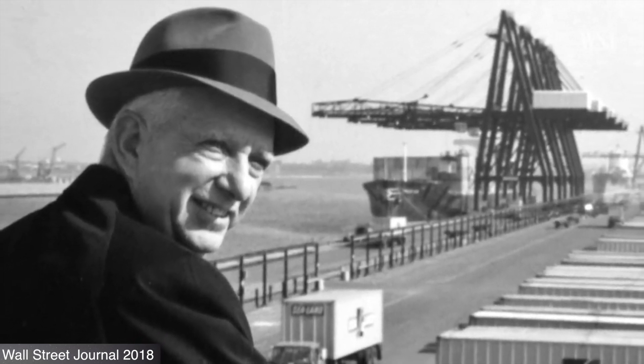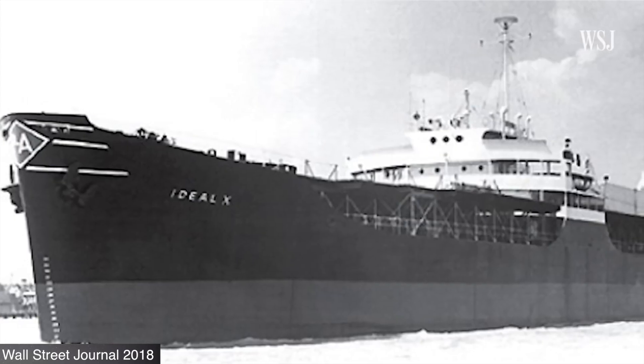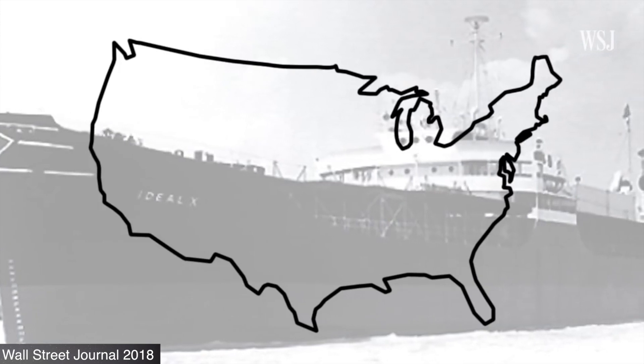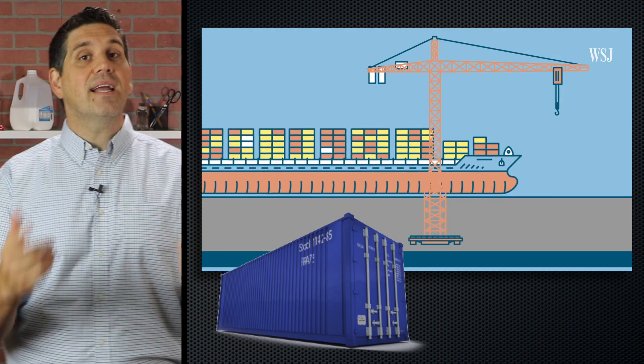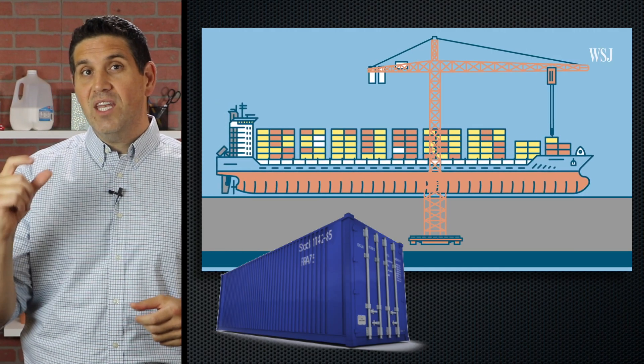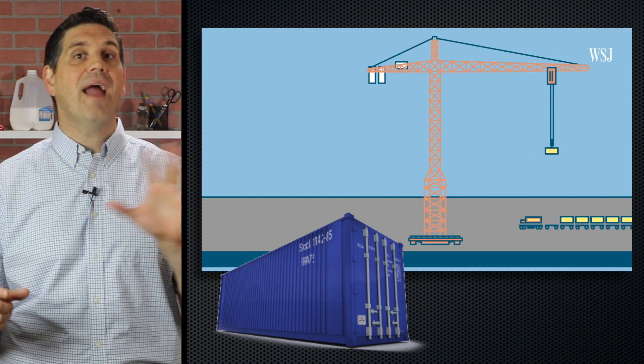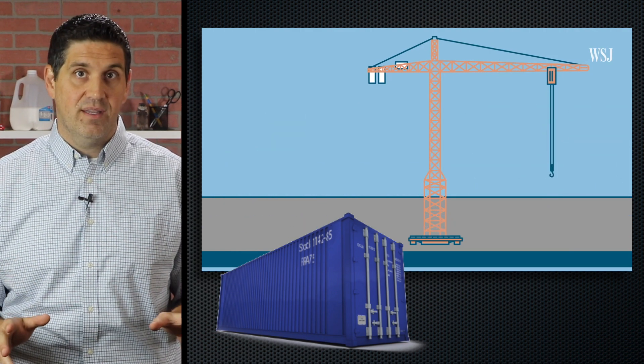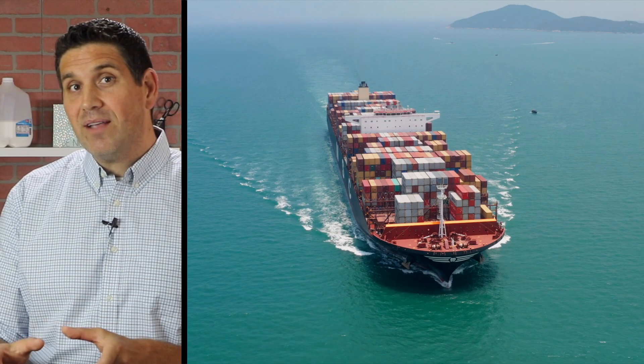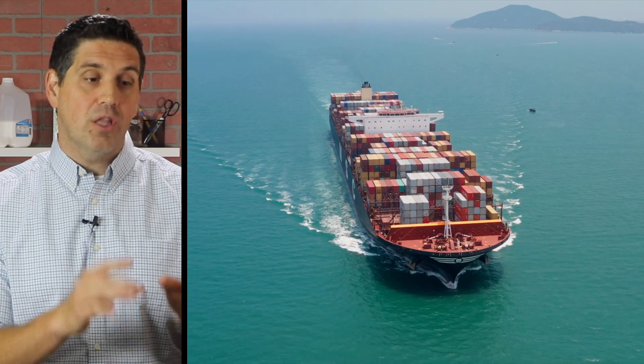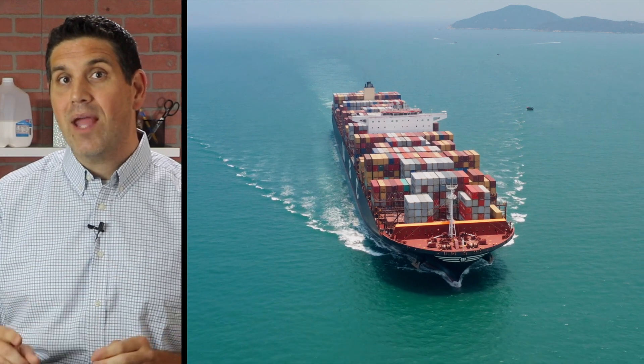That's when American truck driver Malcolm McLean stacked 58 metal boxes on a ship going from New Jersey to Houston. His idea was simple. Instead of unloading individual products, you unload the entire container and that makes things way more efficient. That's a pretty good idea. And his process now called containerization lowered transportation costs and created global markets.